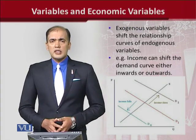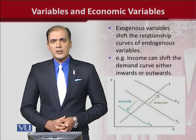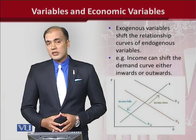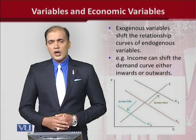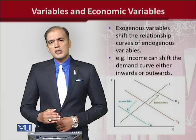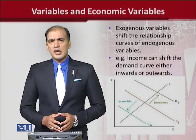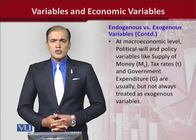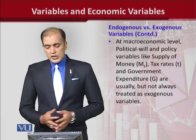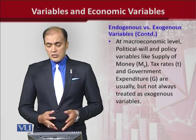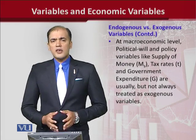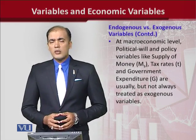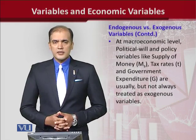Exogenous variables can have an impact on the equilibrium. As you can see in the diagram, price and output are endogenous variables, but the exogenous variable — income — is affecting the relationship by shifting the curve either outside or inside. At the macroeconomic level, variables like political will or policy variables such as money supply, tax rates, and government expenditure are usually treated as exogenous variables, but not necessarily — in some cases they might be internalized and become endogenous. Thank you.